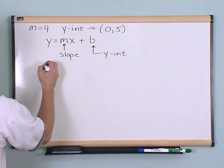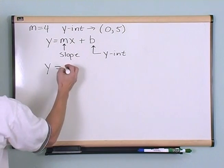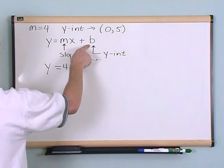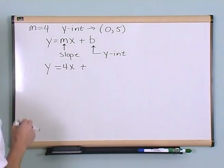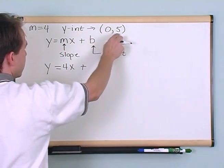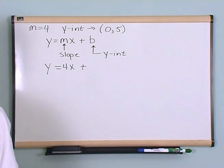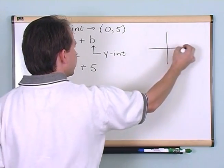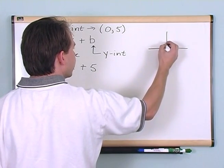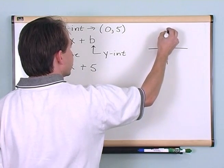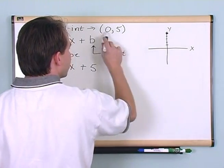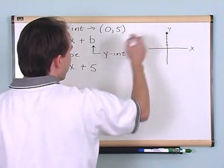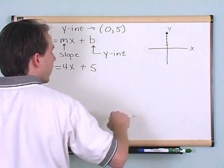All I need to do is say y equals — slope is four — so 4x plus b, and I need to figure out what the y-intercept is. I've given it to you: the y-intercept is (0, 5), so b is five. If I were to plot the point (0, 5), that's up here on the y-axis at five. This is the y-intercept — the point where the line intersects the y-axis.